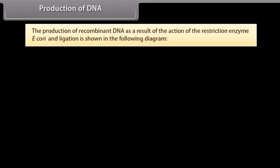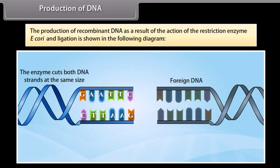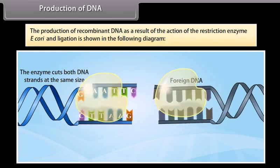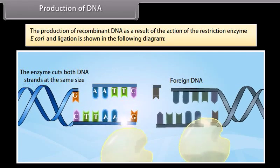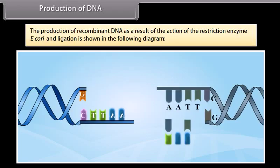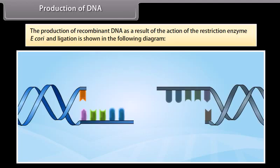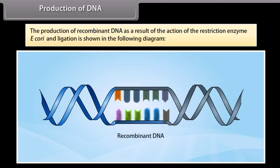Production of recombinant DNA as a result of the action of the restriction enzyme EcoRI and ligation is shown in the following diagram. The enzymes cut both DNA at the same site. After that, both DNA fragments can be joined at the sticky ends, and it results in a recombinant DNA.